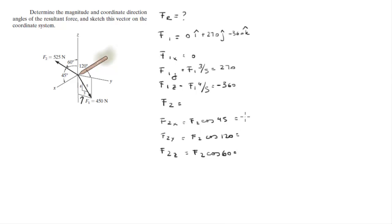So you get 371.2, negative 262.5, and 262.5. That gives you 371.2i minus 262.5j plus 262.5k.